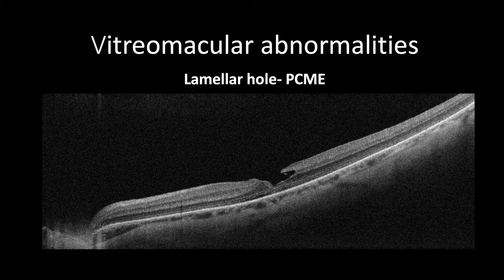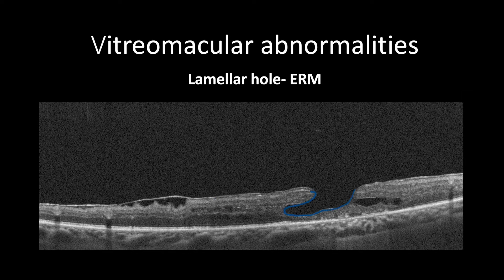Lamellar holes have a lamellar defect in the form of irregular thinning of the outer nuclear layer with cleavage or schisis between the inner and outer retinal tissues. The lamellar hole usually occurs due to avulsion of the cystic roof caused by an uncontrolled inflammatory process, vitreo-macular traction, or tangential traction by an epiretinal membrane, which appears as a hyperreflective band causing corrugation of inner retinal layers. In contrast, it can be presented with medium reflectivity and not induce any traction.